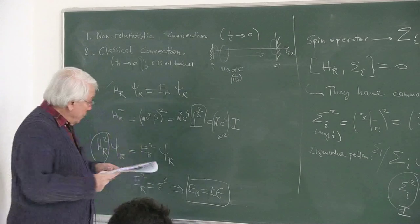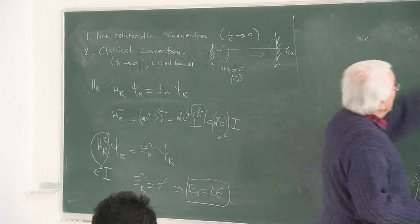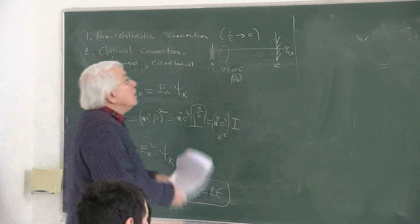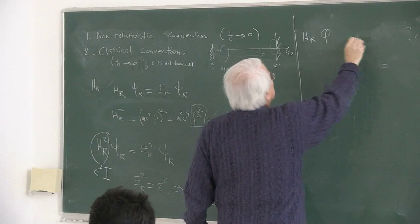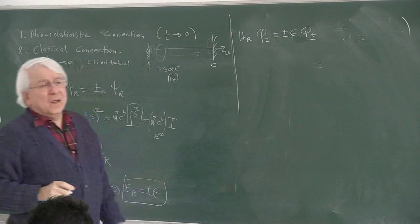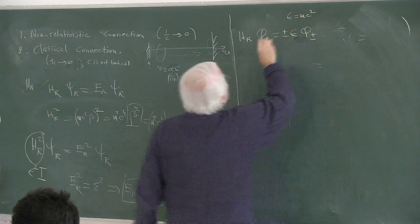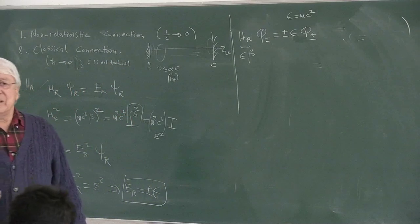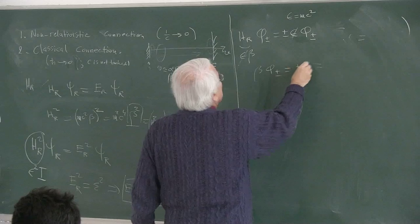These are the energy eigenfunctions. Let me use a different notation. H_R Phi_{±} equals ±epsilon Phi_{±}. Epsilon is mc² by definition. So this is epsilon times beta. The Hamiltonian itself is epsilon times beta. Epsilons cancel, and so you have directly beta Phi_{±} = ±Phi_{±}.